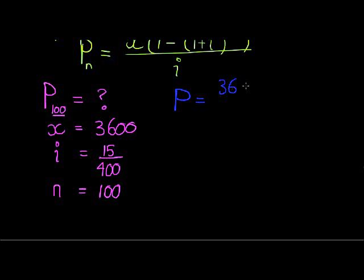If I substitute all of this now into my formula, I get the following: x is 3,600, 1 plus i is 1... sorry, it's not 1 plus i, it's 1 minus (1 + i).